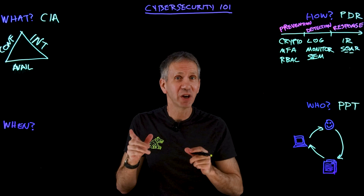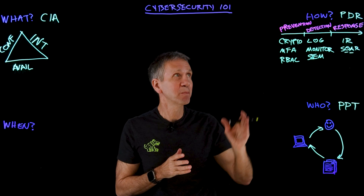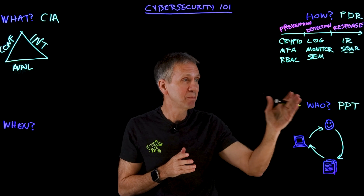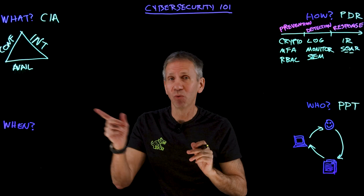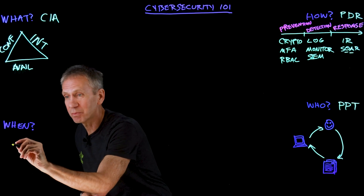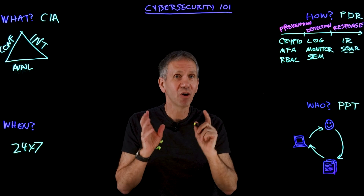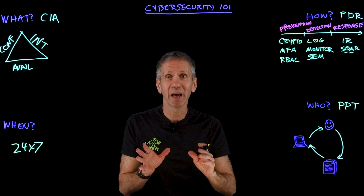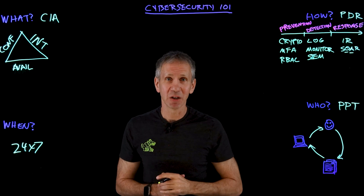There you go — three acronyms to rule them all, just as promised. CIA — confidentiality, integrity, and availability — is the what. PDR — prevention, detection, and response — is the how. And PPT — people, process, and technology — is the who. Now, how about the when? When do you have to be able to do all of this? The answer is pretty simple: it's 24/7. Because you have to be right all the time. The bad guys only have to be right once. They don't sleep — therefore, you can't be caught napping.